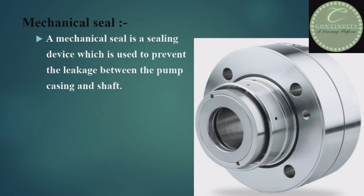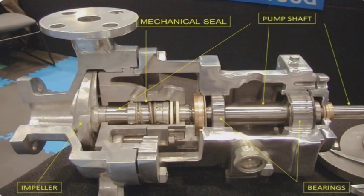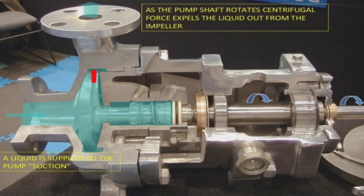Looking at this picture, you can see a mechanical seal used in the pump casing to stop leakage. If a mechanical seal or gland packing is not used, liquid comes out from the casing through the stuffing box — that is, from the clearance between the casing back plate and the shaft.